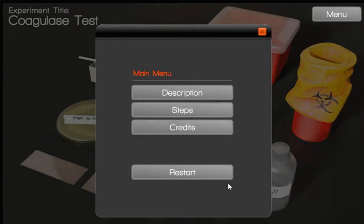The next experiment is the Coagulase test. In the main menu we can see the description and read about the significance of the Coagulase test in microbiological practice and in clinical practice too.